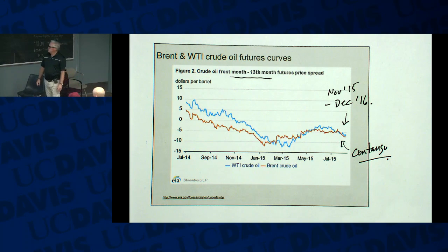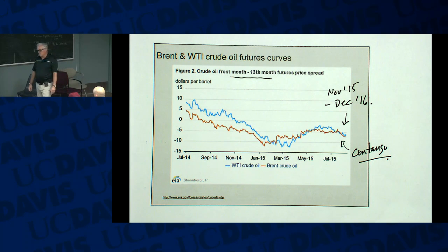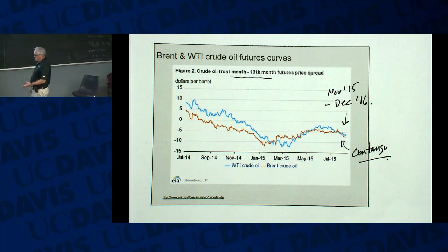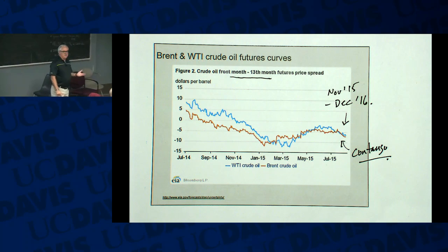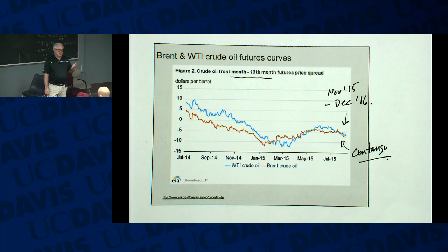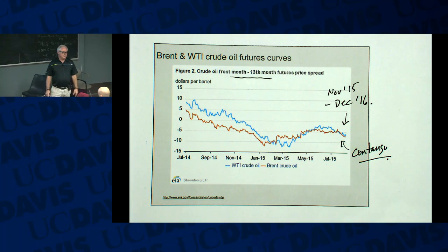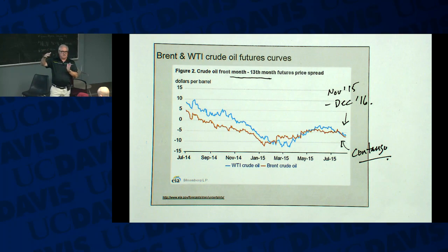A student asks why 13 months is used rather than 6 or 18 months. It's somewhat arbitrary - it does take some time, perhaps about a year for oil rigs that have gone offline to start pumping again. We can talk about this spread for any time difference. For the corn market we might use a three- or six-month period. But it's fairly typical in oil to talk about a one-year time period.